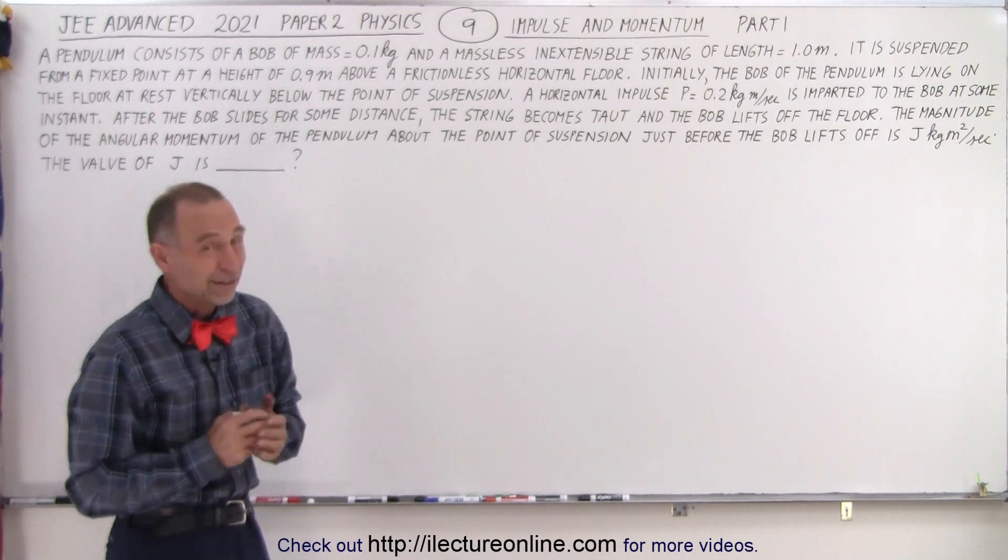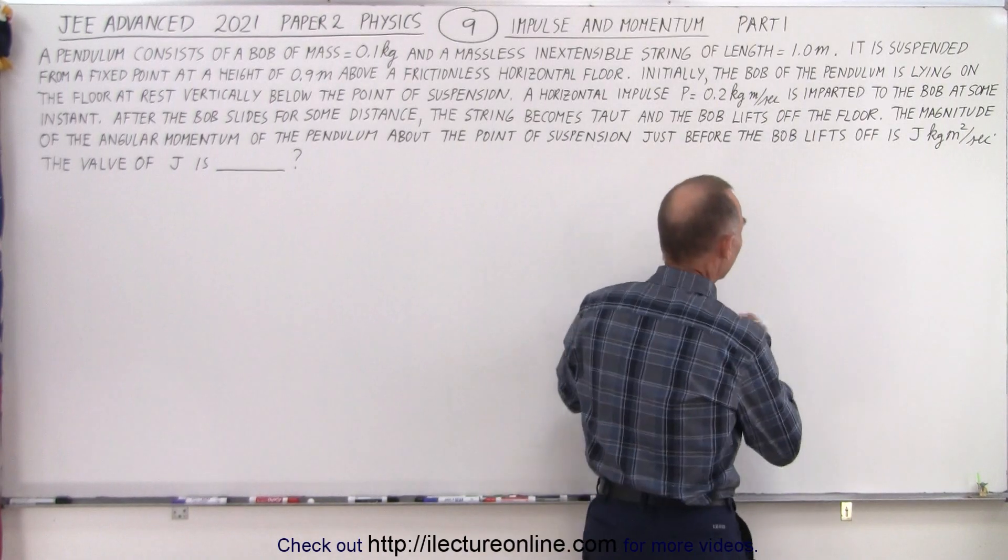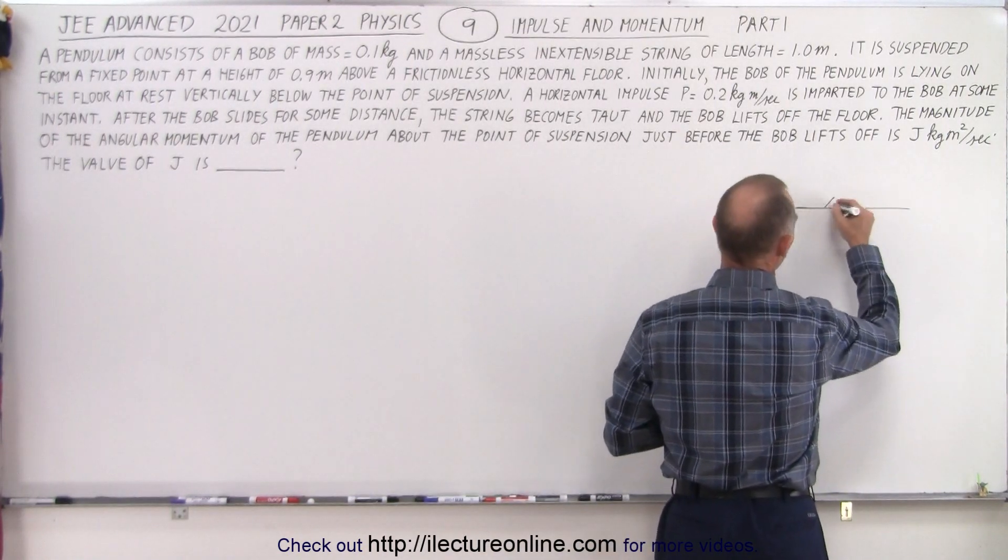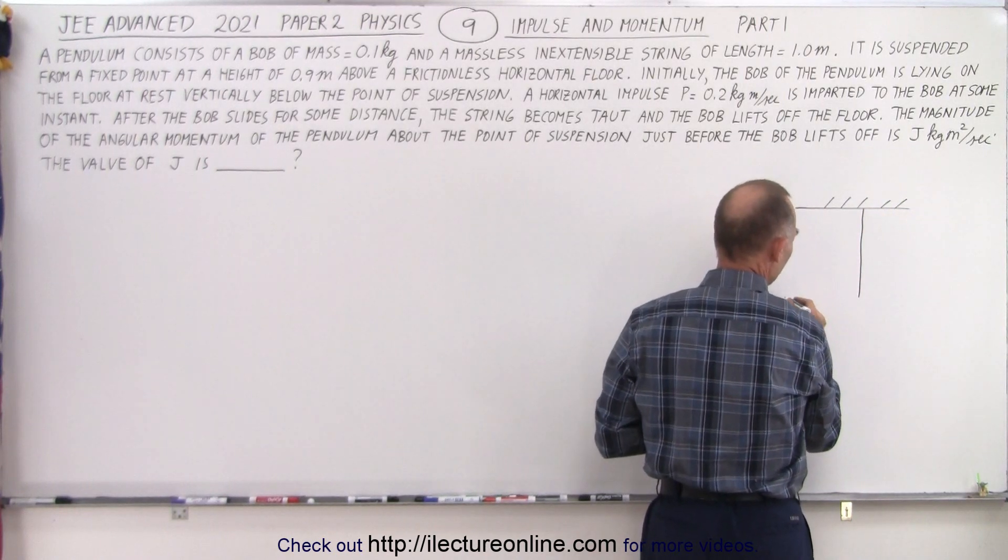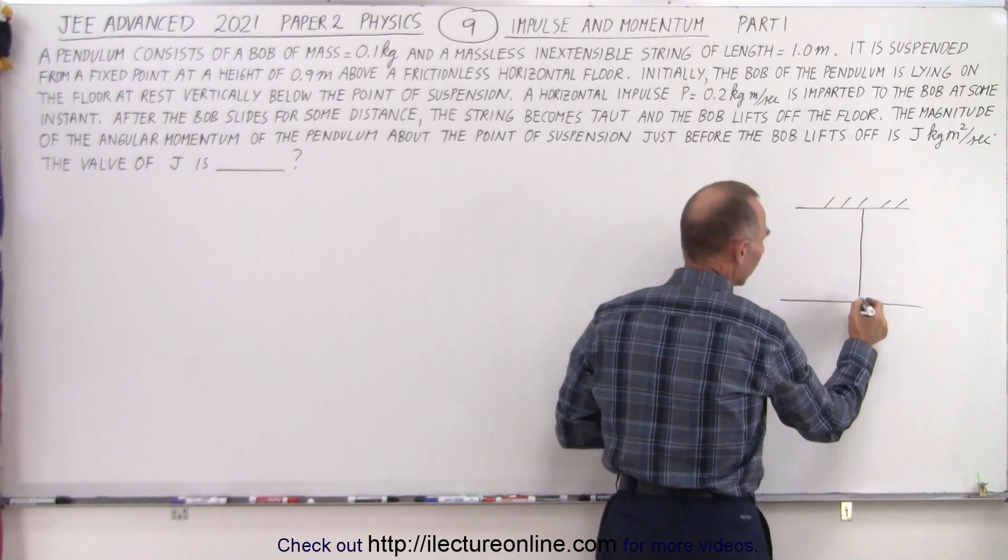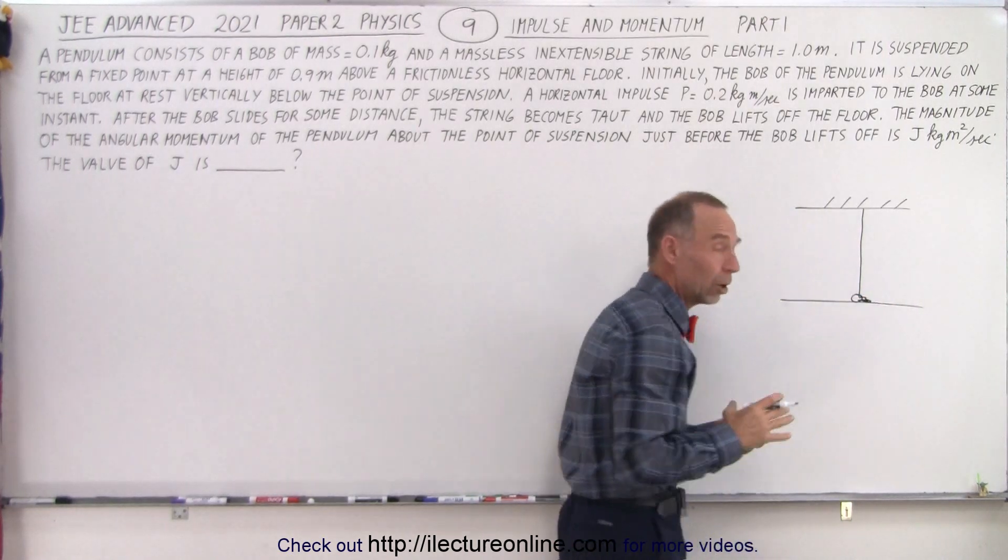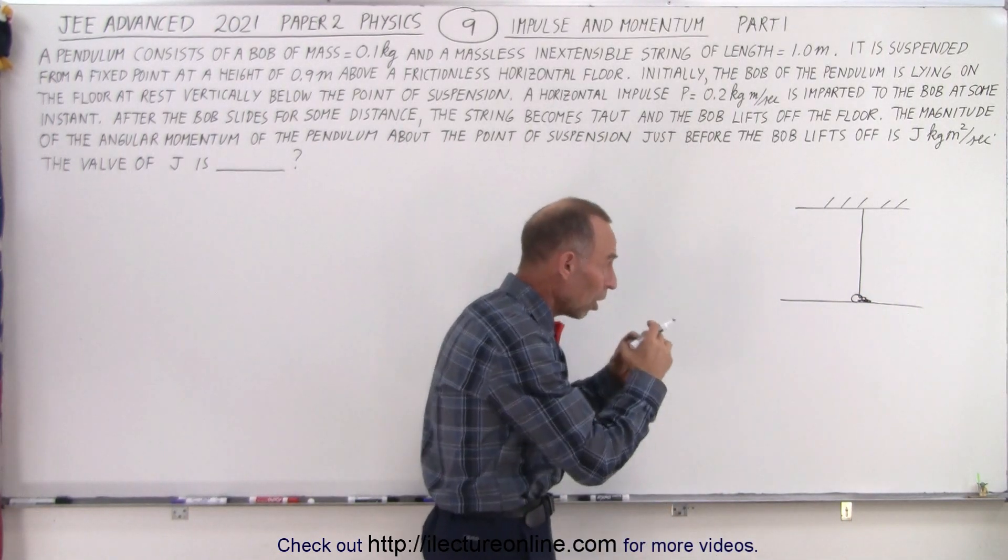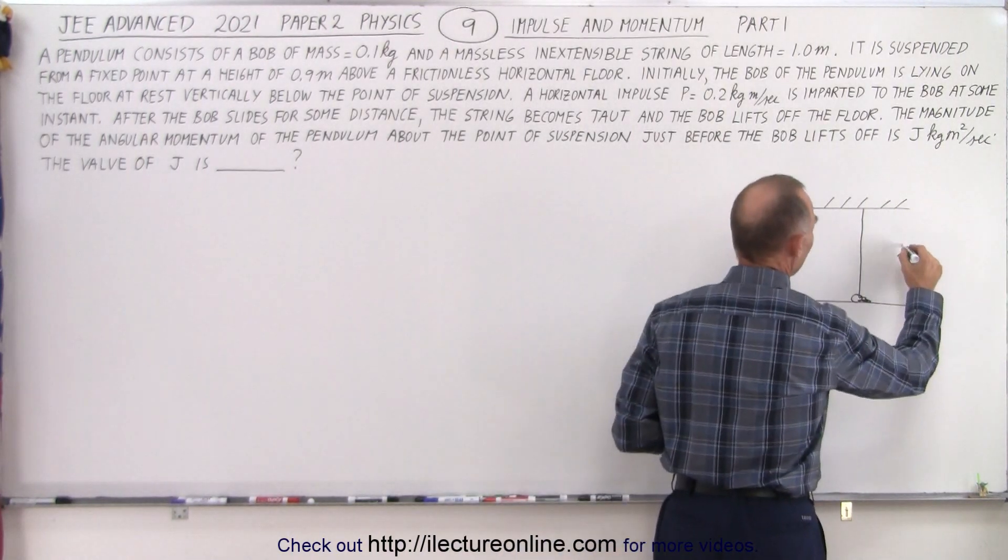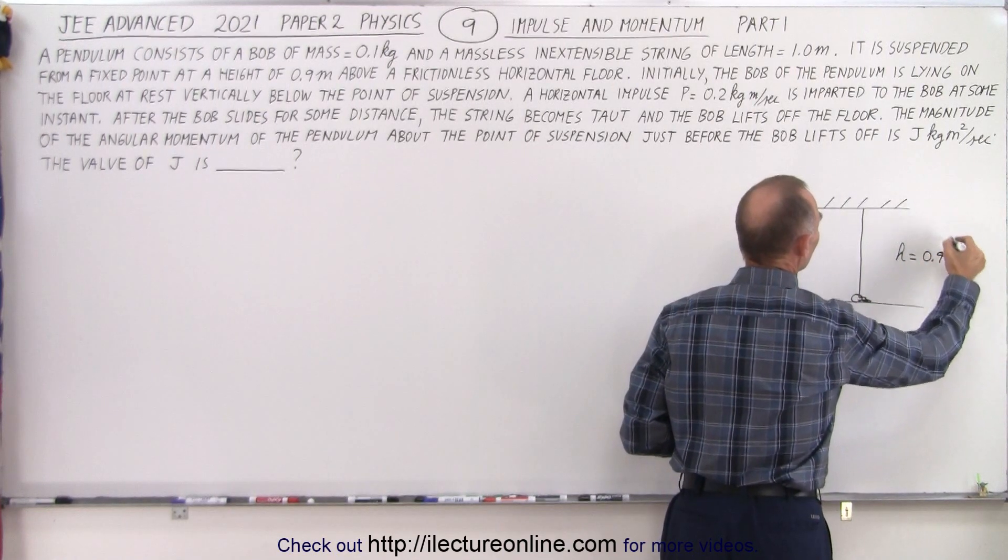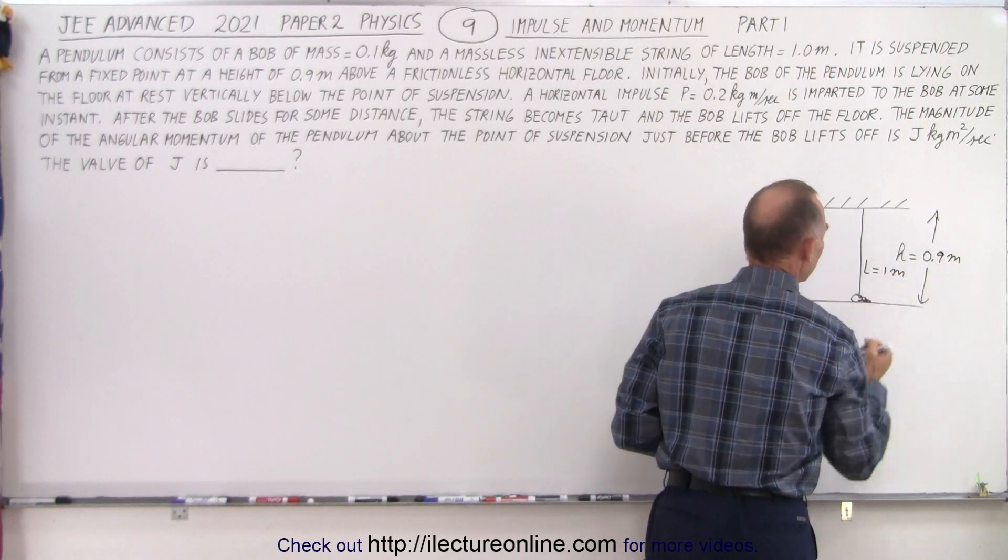This is an interesting problem. I've never seen anything like it before. Let's make a quick drawing of what's happening. We have a ceiling. From the ceiling we suspend the string but the string is longer than the distance from the ceiling to the floor so it's crumbled up a little bit and attached to what they call a bob. That's a small object you can think of as a point object. The height of the ceiling is 0.9 meters but the length of the string is equal to 1 meter.